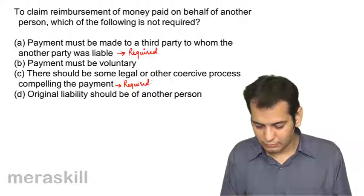A contingent contract depending on the happening of an impossible event is: A) void, B) voidable, C) valid, D) illegal. If the event is impossible, the contract becomes void. The answer is A: void.